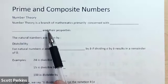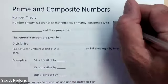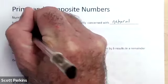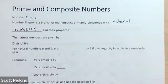Number theory is a branch of mathematics primarily concerned with natural numbers and their properties. You're going to notice as we go through some of the sections in this unit that we do talk about other numbers besides natural numbers. And that's because natural numbers are the most basic set of numbers.